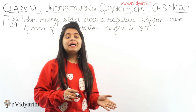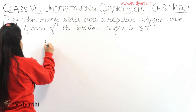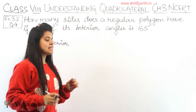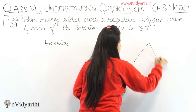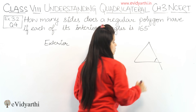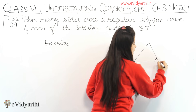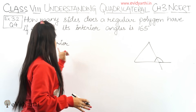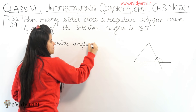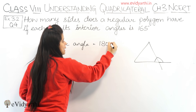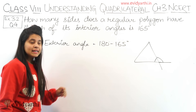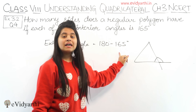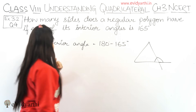So it means we have to first find the exterior angle. The exterior angle can be found because when we have one interior angle, the exterior angle and interior angle form a linear pair. So the exterior angle will be 180 minus 165 degrees. Since the interior angle is 165, if we subtract it from 180, we will get the exterior angle.